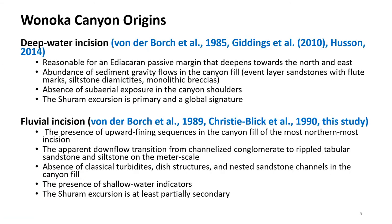The origin of the Wanaka Canyons has been debated for quite some time, with the two leading hypotheses being deep water incision and fluvial incision. Deep water incision is reasonable for the Ediacaran passive margin at this time, and the presence of sediment gravity flows and the lack of evidence for subaerial exposure in the canyon shoulders supports this hypothesis. This would suggest that the Shuram excursion could be primary and a global signature.